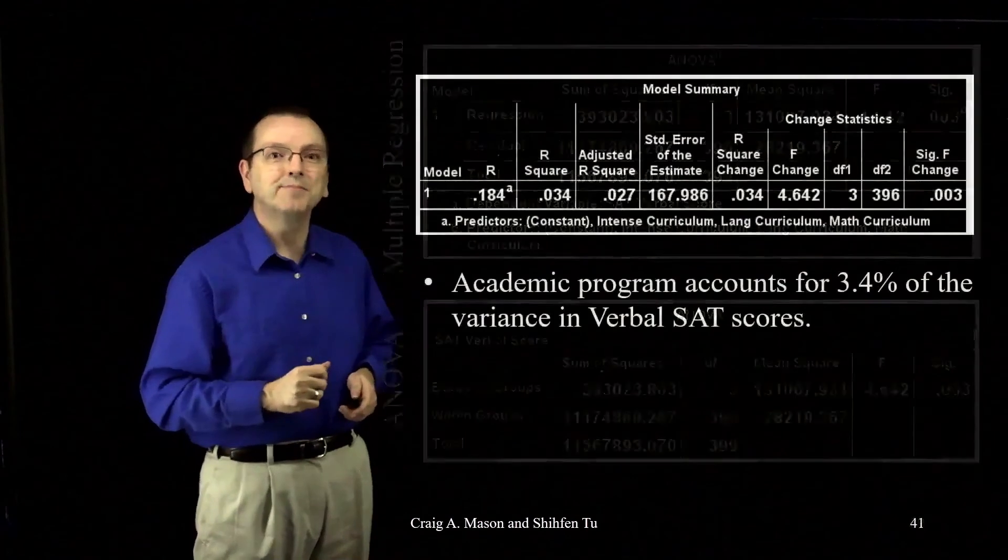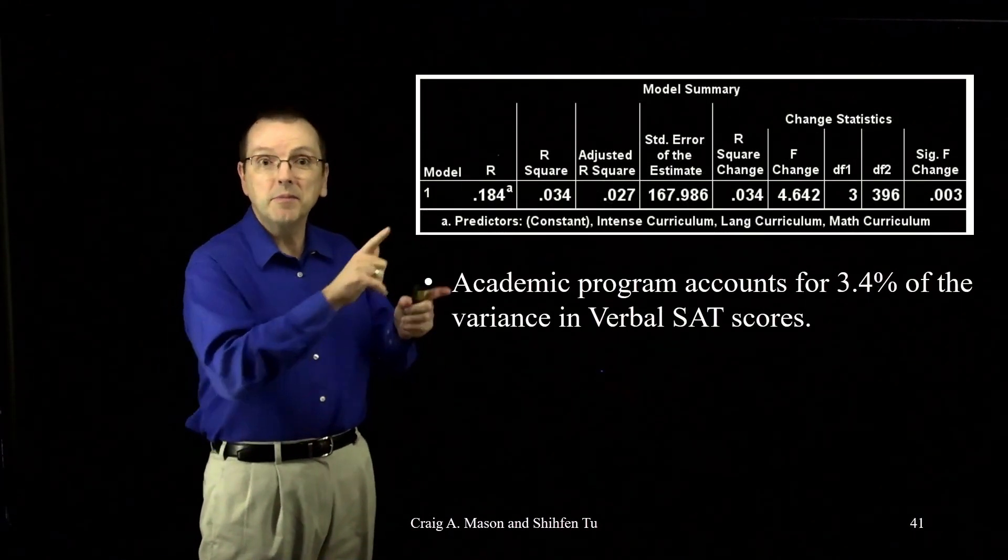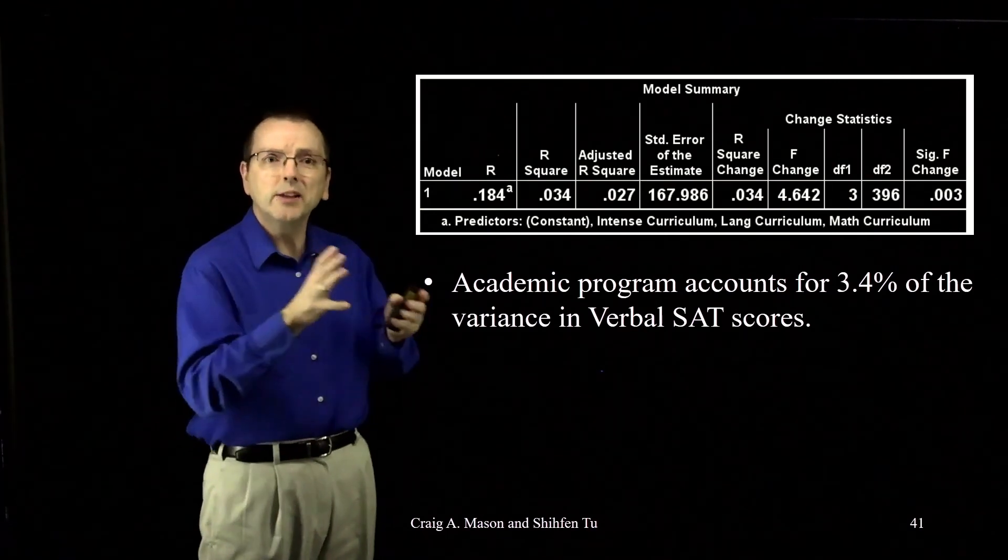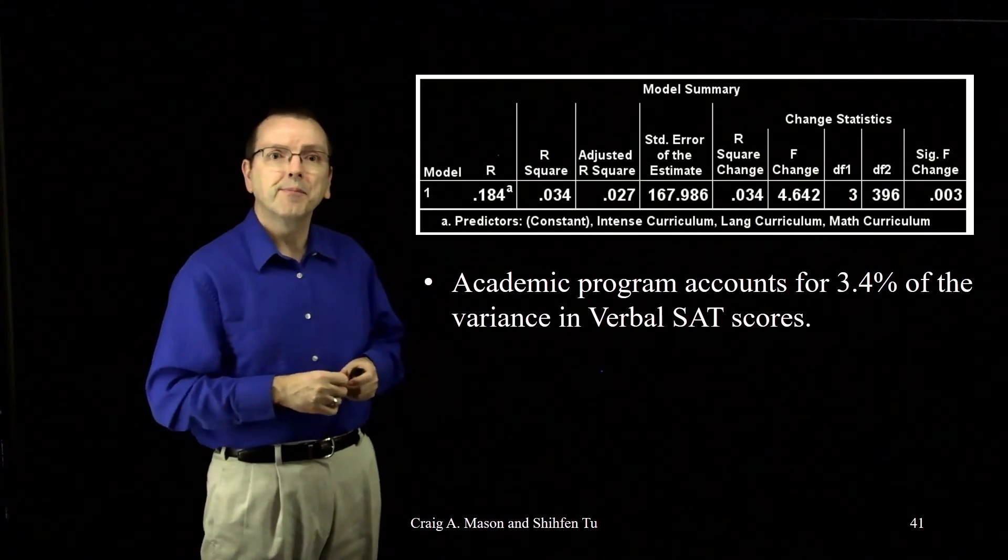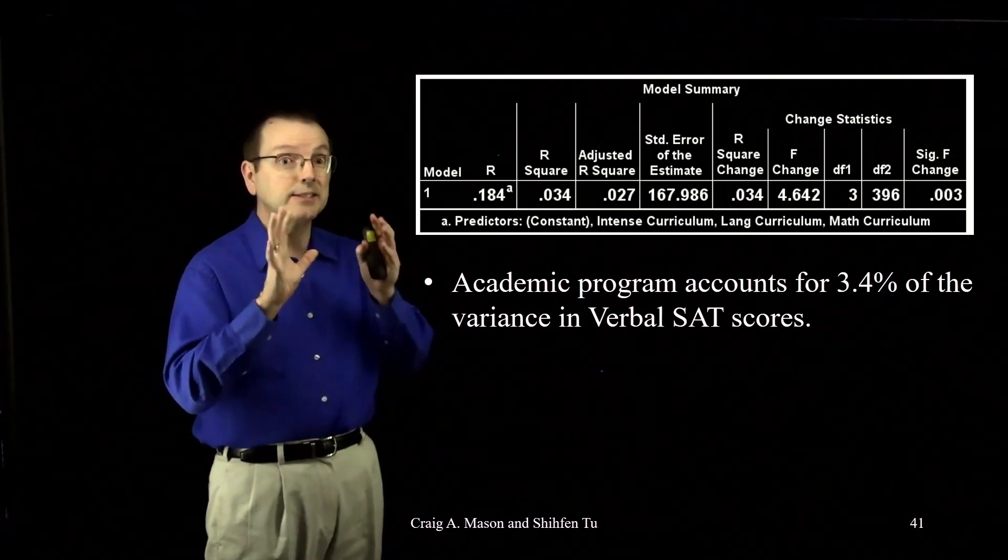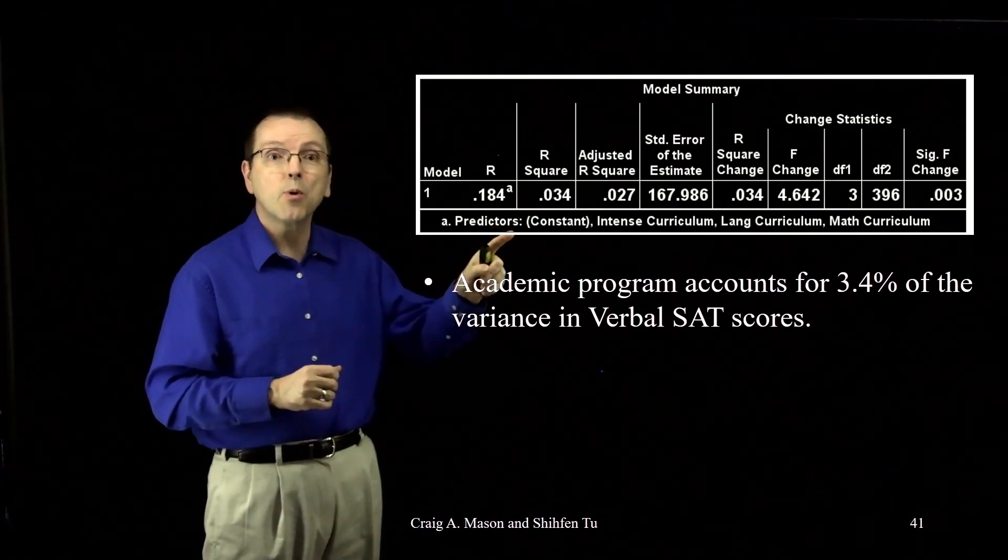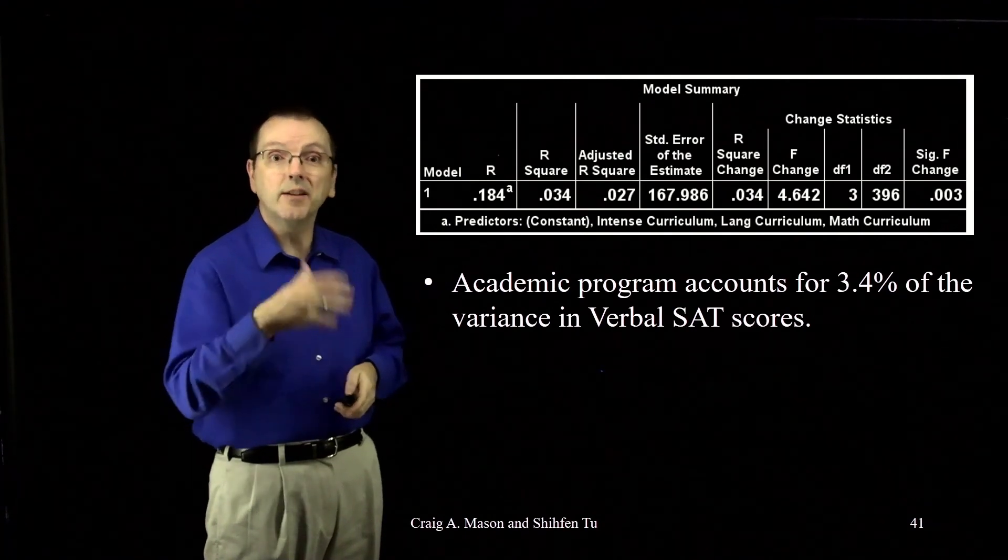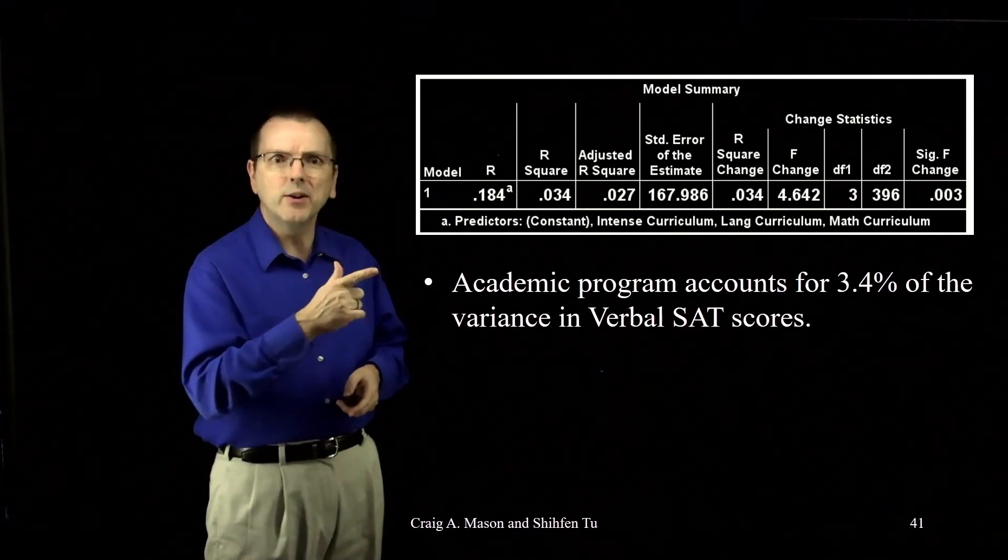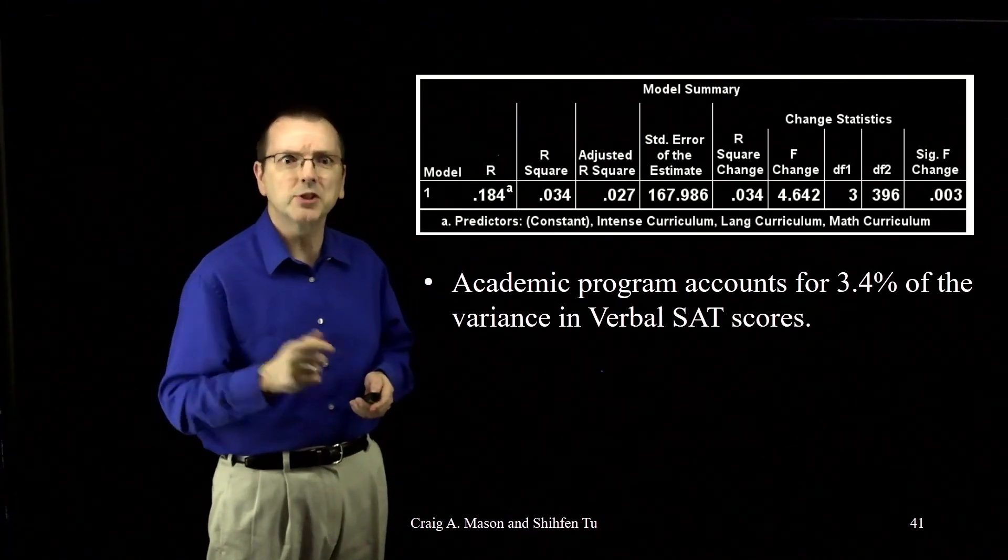Let's keep going. Also in regression, we get the model summary table, where we see the R-squared. Here we see that academic program, that set of all three dummy variables, accounts for 3.4% of the variance in verbal SAT scores. And we know that that's statistically significant from the ANOVA table we just saw.